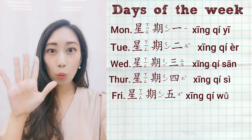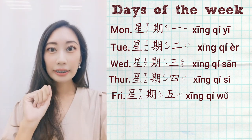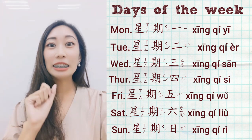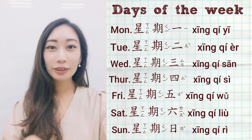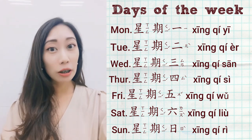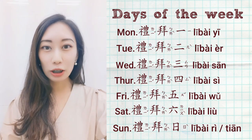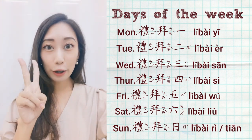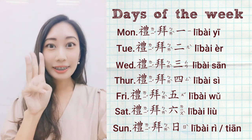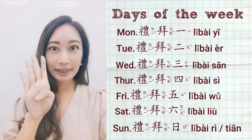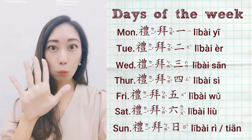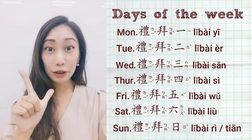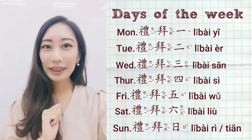星期五, 星期六, 星期日. You can also say 礼拜. So you can say 礼拜一, 礼拜二, 礼拜三, 礼拜四, 礼拜五, 礼拜六, 礼拜日, or 礼拜天.